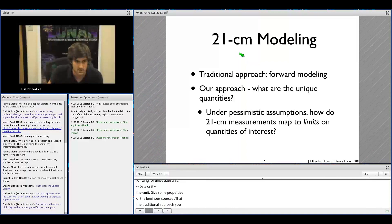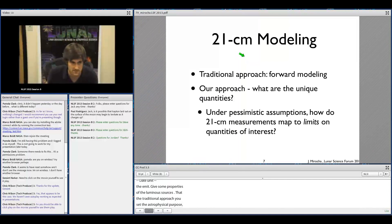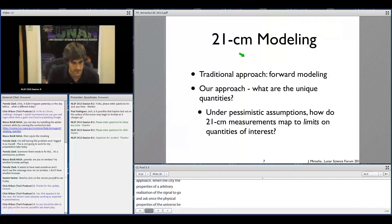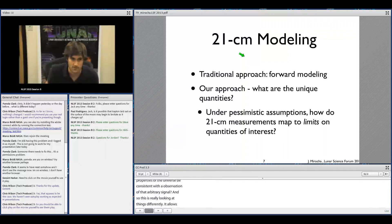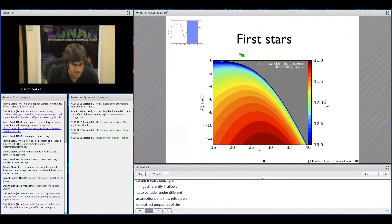We're actually going to take the opposite approach. We're going to investigate the properties of an arbitrary realization of the signal and ask what set of physical properties of the universe would be consistent with an observation of that arbitrary signal. This allows us to consider, under different sets of assumptions, how reliably we can extract properties of the universe given these inflection points in the 21-centimeter signal.